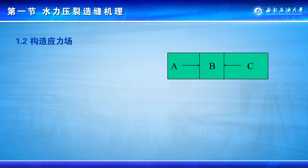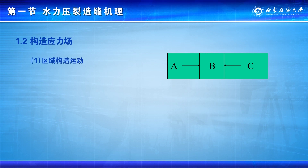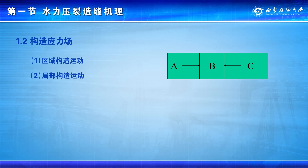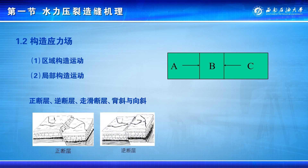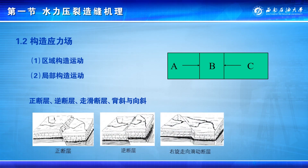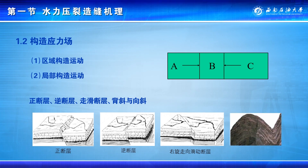从地质角度，构造应力来源于各种构造运动，包括区域构造运动及巨大构造单元之间的相互作用，以及局部构造运动产生于局部岩体之间的相互作用，如正断层、逆断层和走滑断层以及岩层弯曲等。正是这些构造作用使得两个水平向主应力不相等。